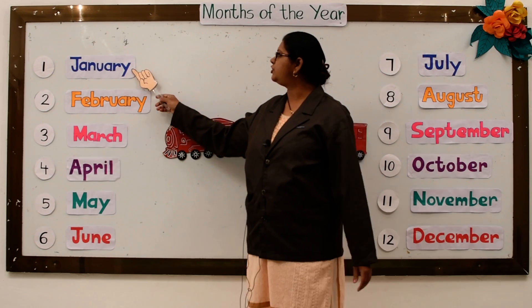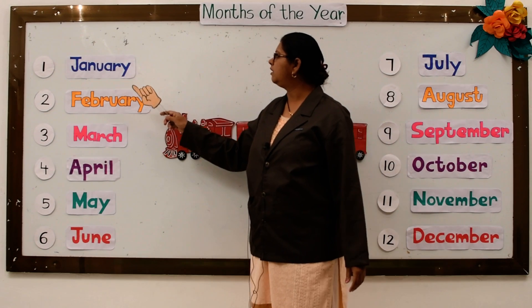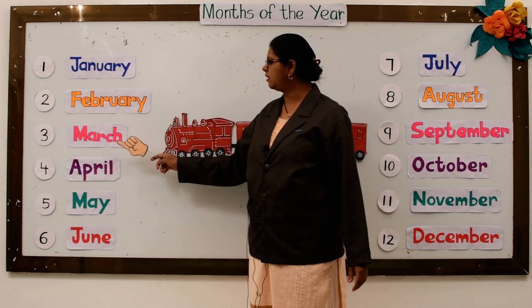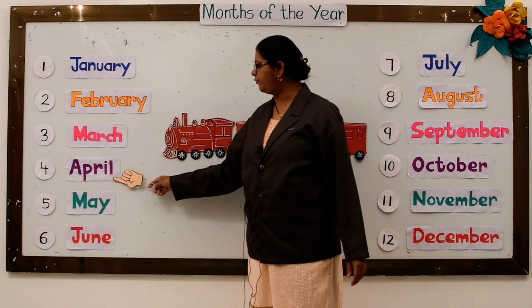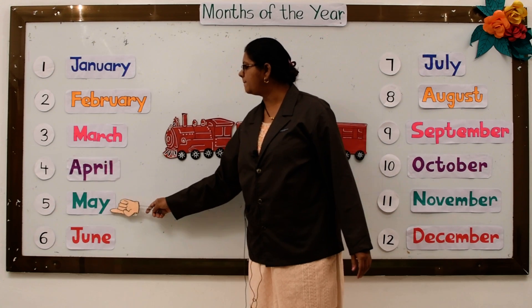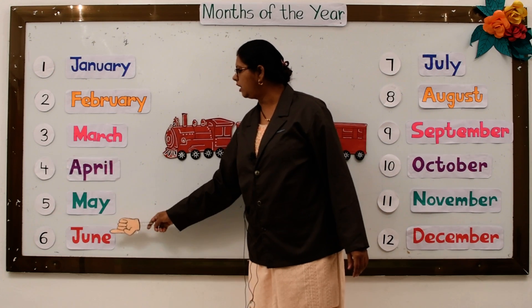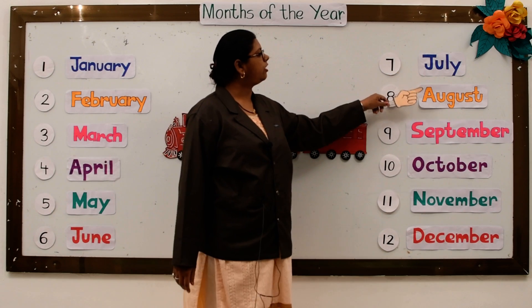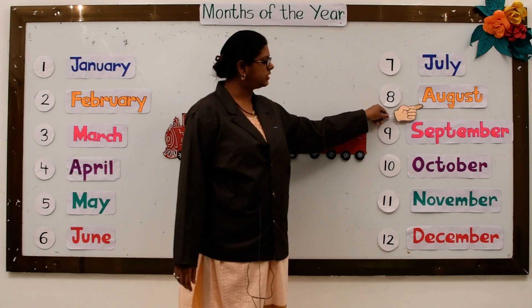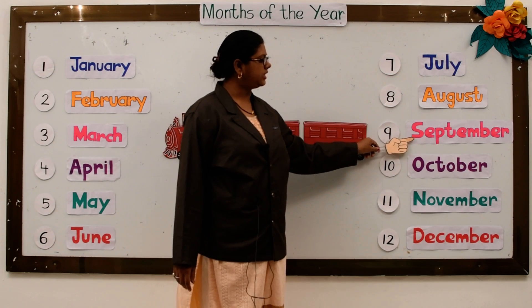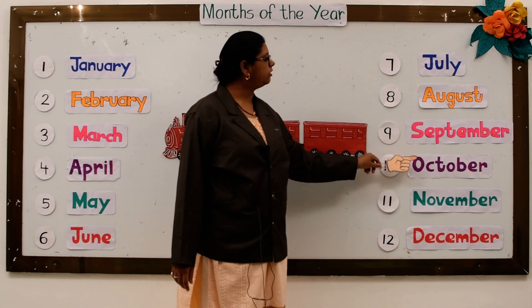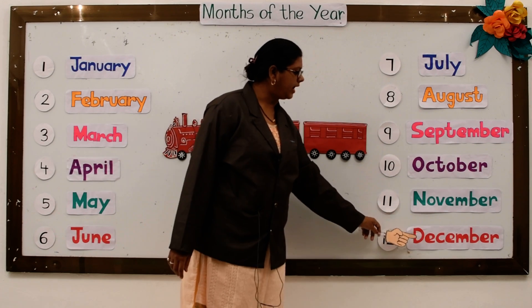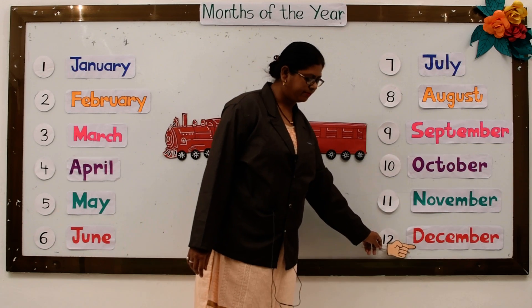January, February, March, April, May, June, July, August, September, October, November and December.